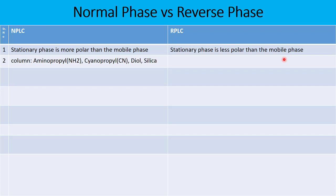What are the examples of stationary phases? Aminopropyl, cyanopropyl, diol, and silica are examples of normal phase liquid chromatography columns. C8, C18, and phenyl are examples of HPLC columns generally used in the reverse phase mode.